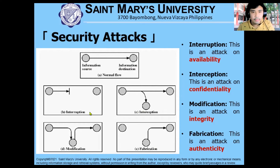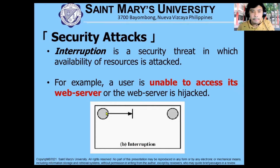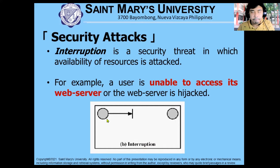Interruption is a security threat in which available resources are attacked — basically you are unable to access the web server, or the web server has been hijacked. For example, you are the user trying to access your Facebook account and you cannot access it. That's the concept of interruption: the services from the server become inaccessible to you.